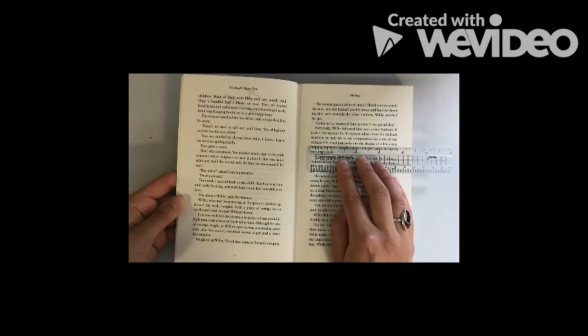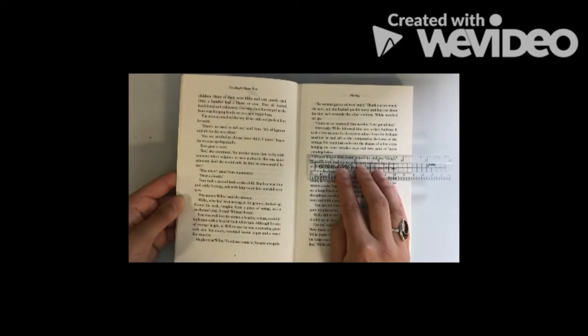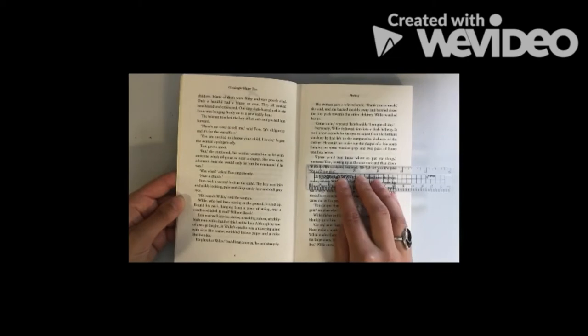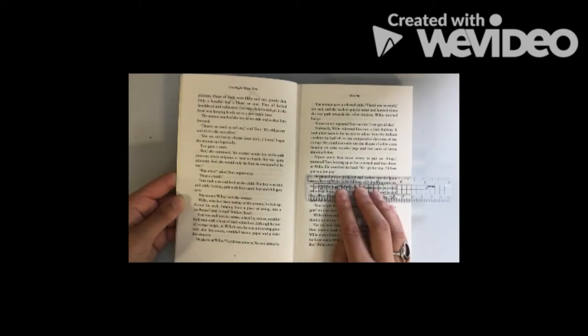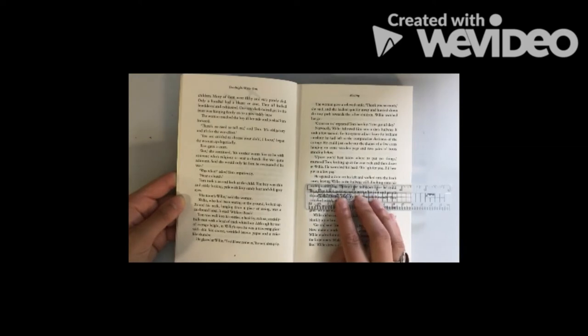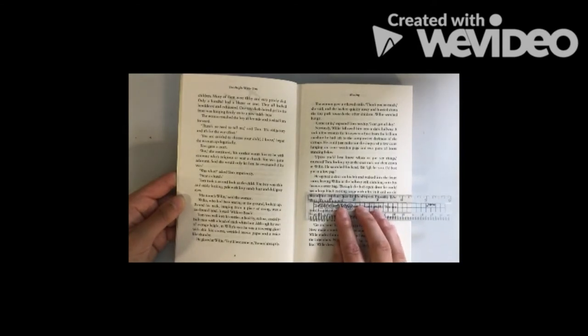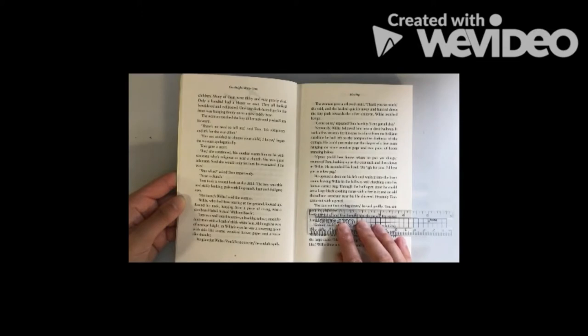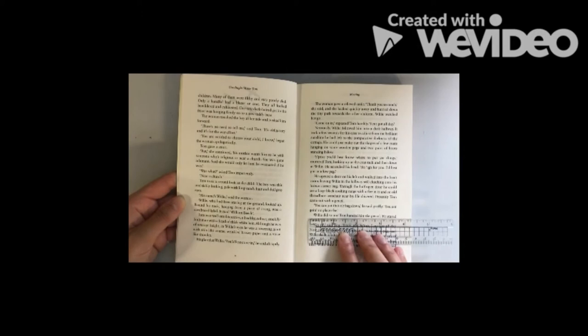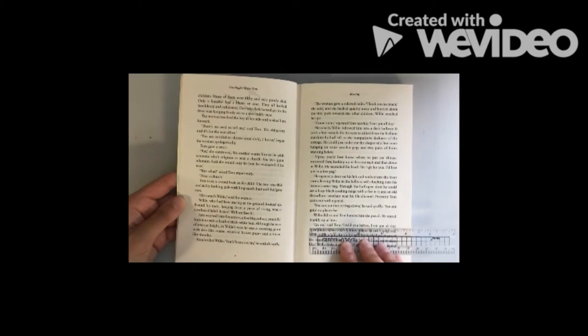Nervously, Willie followed him into a dark hall. He could just make out the shapes of a few coats hanging on wooden pegs and two pairs of boots standing below. Suppose you'd best know where to put your things, muttered Tom. He scratched his head, bit eye for you, I'd best put in a low peg. He opened a door on his left and walked into the front room. Go on, said Tom. Make a mark so I know where to put a peg, see?